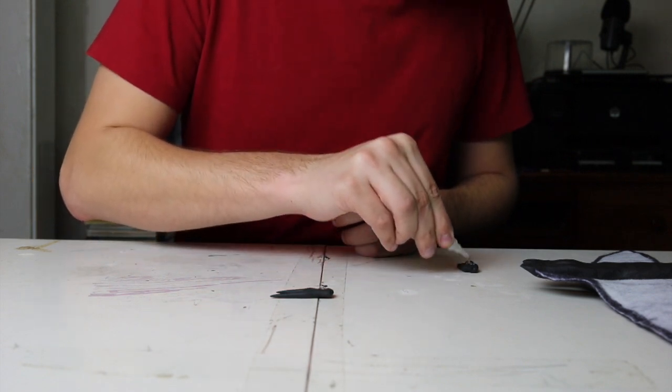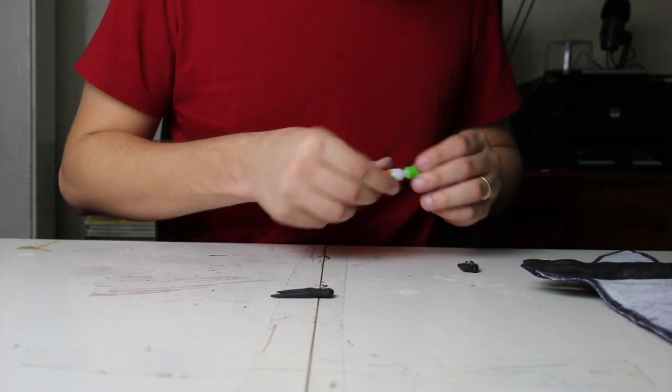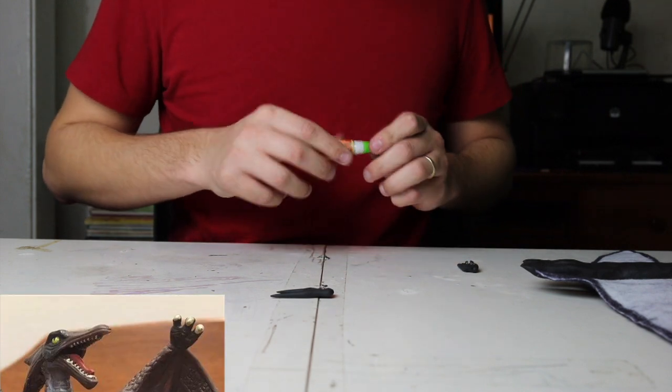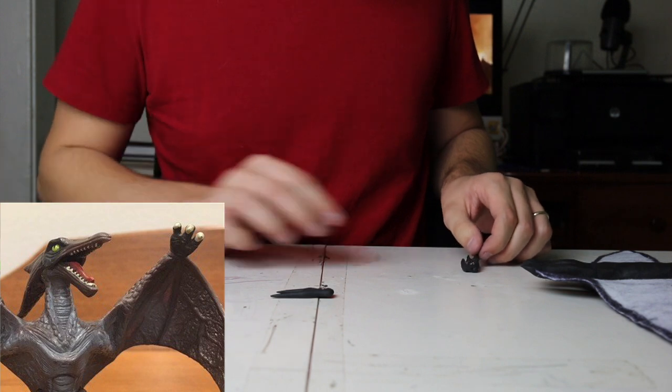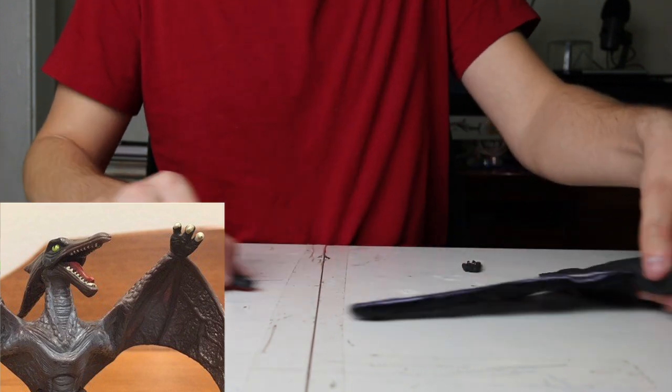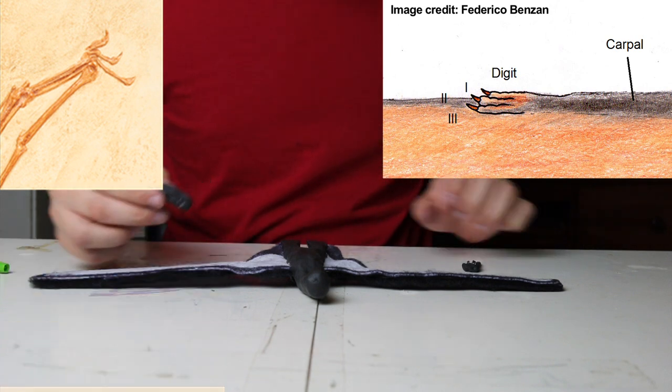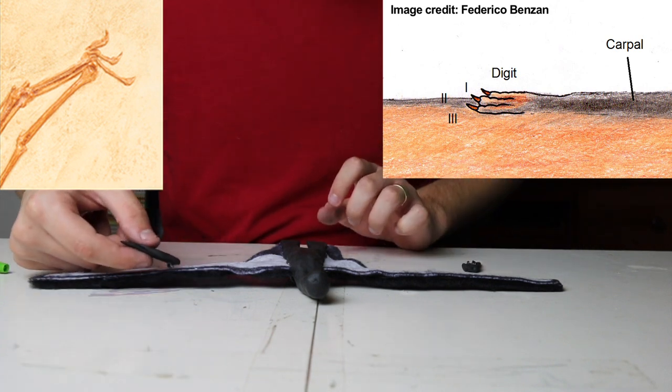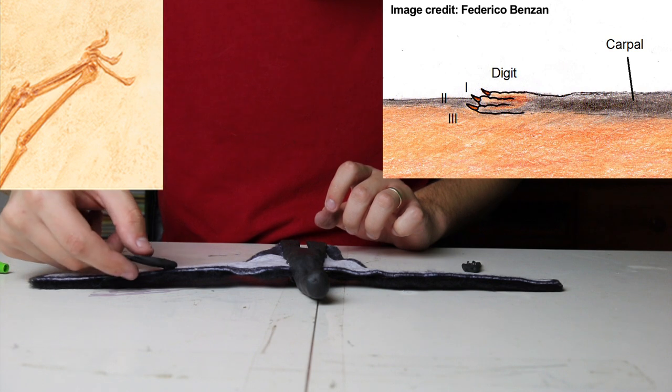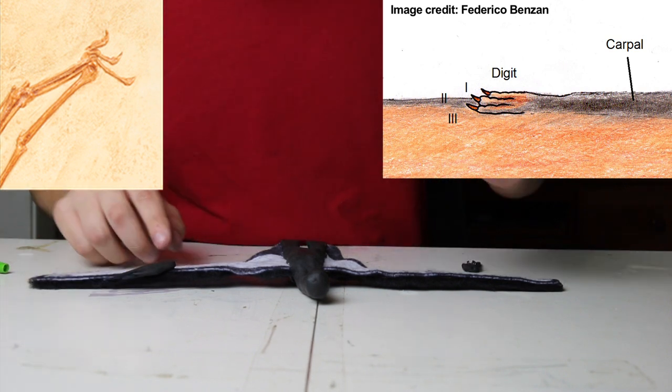A common mistake that you would see in older depictions of pterosaurs would be for the fingers to be pointing straight out, but that was physically impossible. The fingers should be pointed away from the body. You also want to make sure that the fingers are not all the same size, they get longer as they approach the fourth finger.